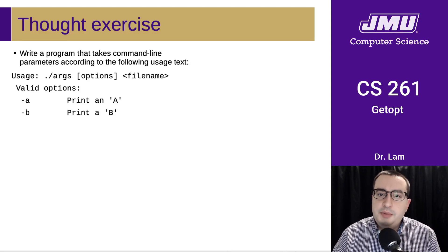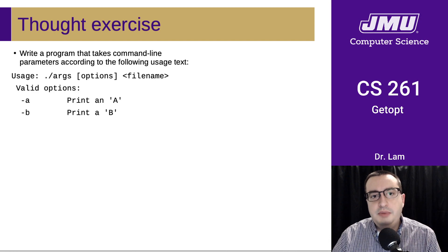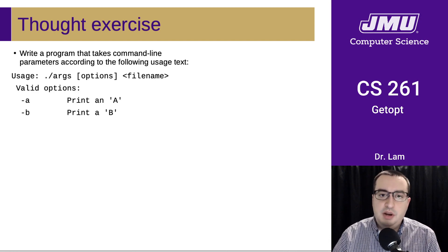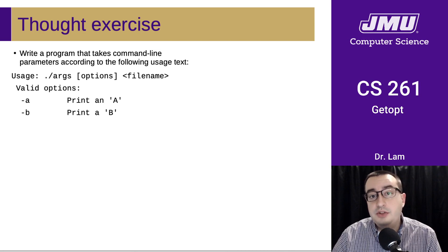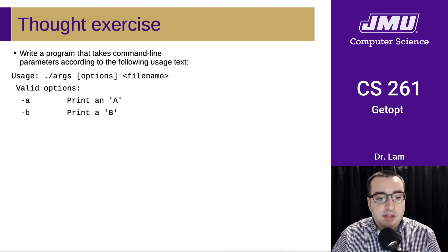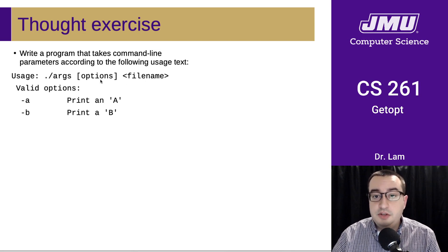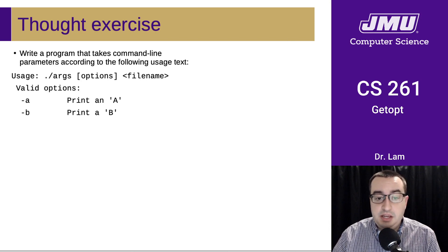For the next topic, let's start by doing a little bit of a thought exercise. Let's think about writing a program that takes command line parameters according to a usage or help text. It's a program that takes some options and then a file name — the file name has to be there, the options are optional, and the two valid options are dash A and dash B.